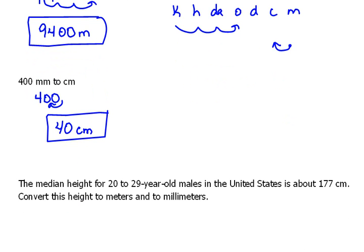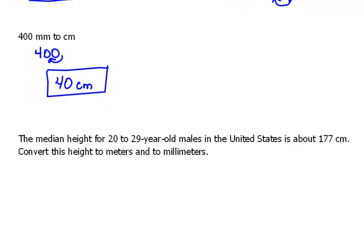Now, we can even do this with word problems. Let me scoot down here a little bit more, and I'll rewrite my mnemonic device. Kids have dropped over dead converting metrics. The median height for 20 to 29-year-old males in the United States is about 177 centimeters. Convert this height to meters and to millimeters.